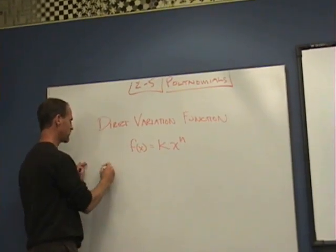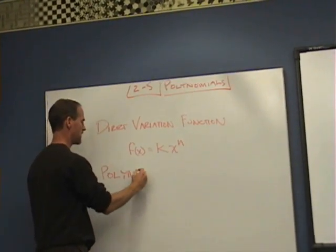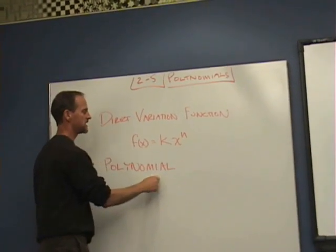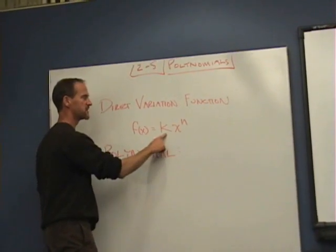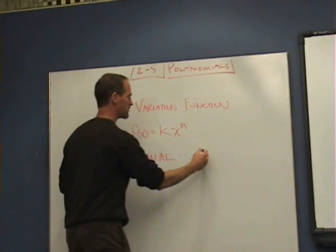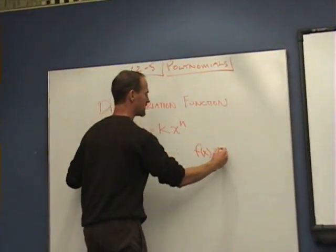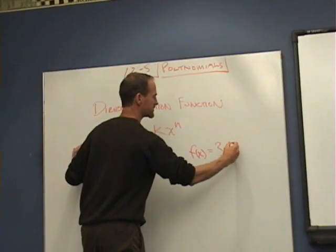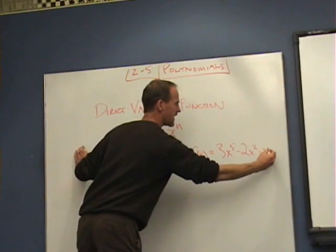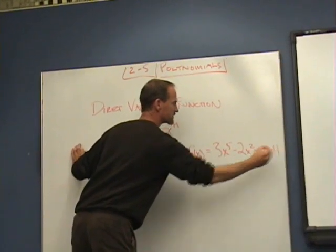A polynomial function is one in which we've got a series of these direct variation functions added up. So it might be f(x) = 3x^5 - 2x^2 - x + 11 or something like that.